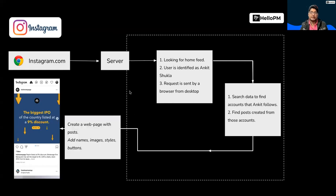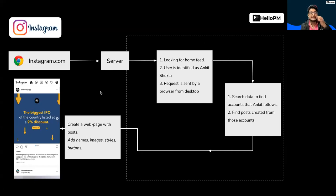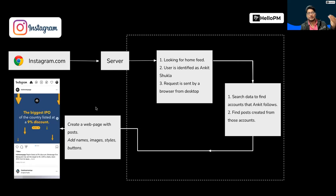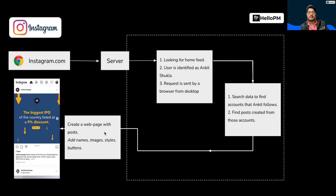Now what happens if we take this further? Initially it was happening at the server, but now there are advanced technologies built with JavaScript — such as React and Angular — where you can just take the data from the server and build all the HTML elements at the browser itself. These are known as client-side rendering systems. So server-side rendering creates the HTML page at the server, while client-side rendering creates the webpage at the client itself. In client-side rendering, the server's responsibility is just to send enough data; everything is created at the client.